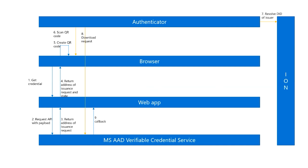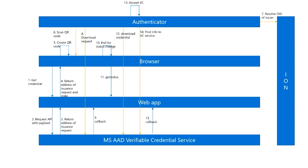Once that checks out, we download the request. At that point our service gives a callback to the web app indicating that somebody read the request. The browser polls for status changes and now knows to hide the QR code. Authenticator downloads the credential manifest — that's where we define how the card looks, what claims you want to collect, etc. The user accepts the verifiable credential inside of the wallet, we post that info back to our service fully signed, and again a callback is sent to our web application so the browser can update the UI.